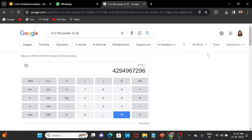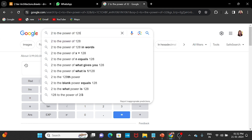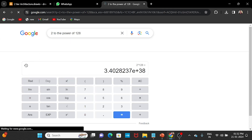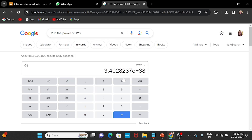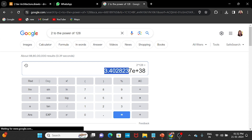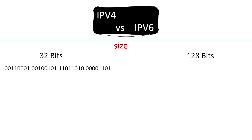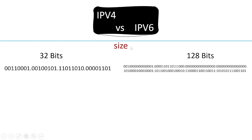Let's look at this. If IPv4 has 32 bits, IPv6 has 128 bits. So we have 2 to the power of 128 bits in IPv6. This is a very long number — all those zeroes and ones make it very long.